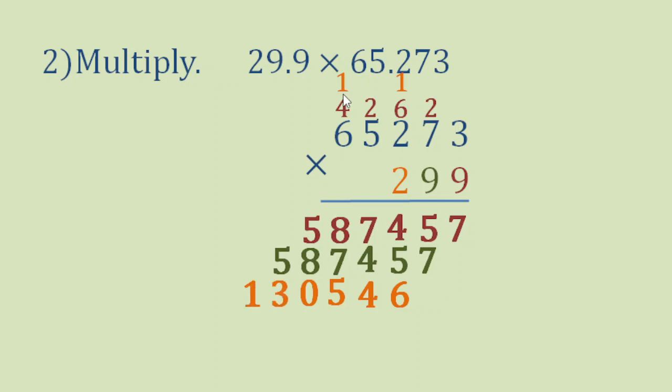Now we are going to add vertically, adding corresponding digits. So we have here 7 by itself. Then 5 plus 7 is 12. Bring down 2, carry 1.